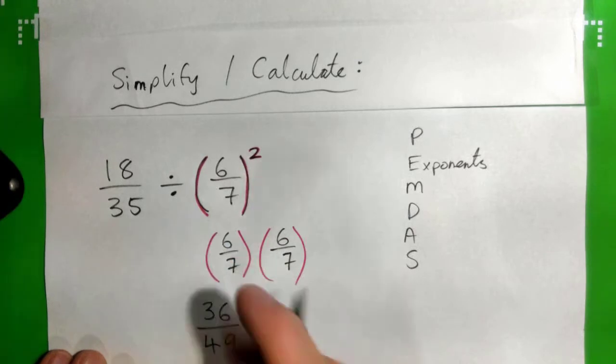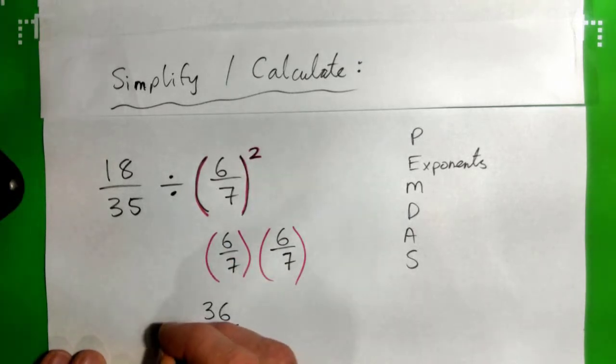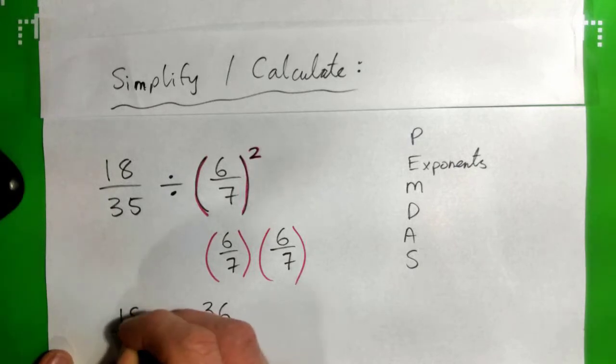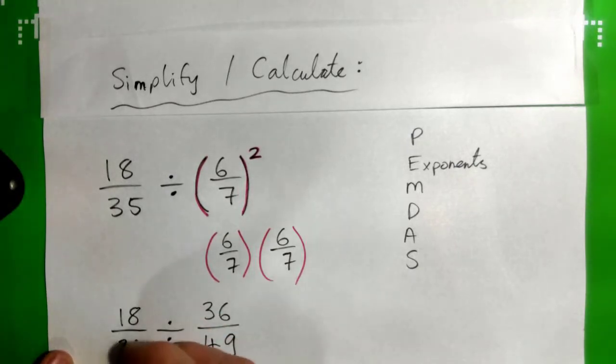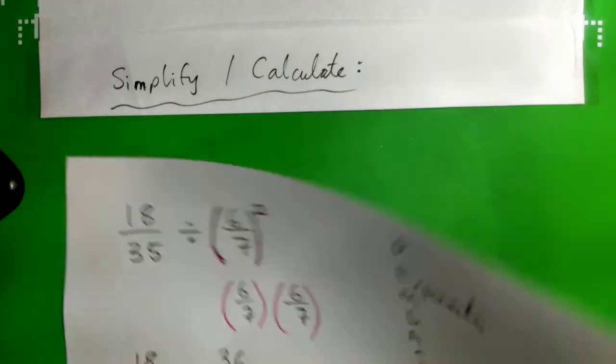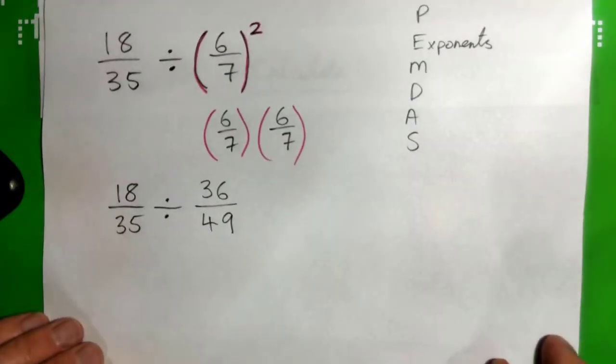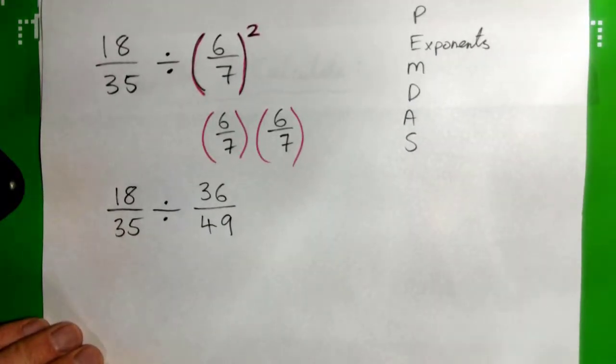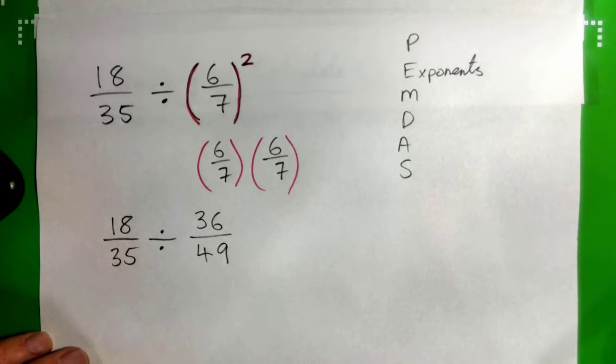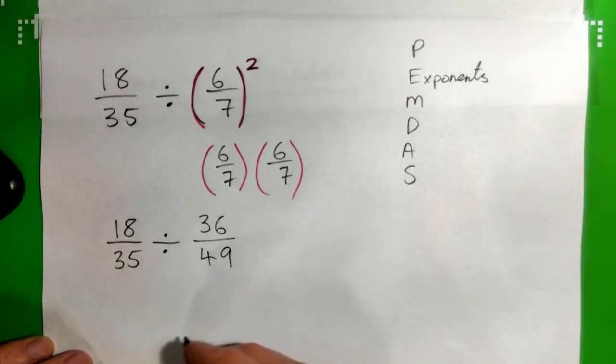So we've applied the exponent. I'm just going to write it out again. 18/35 divided by 36/49. Now what? Yes, exactly.